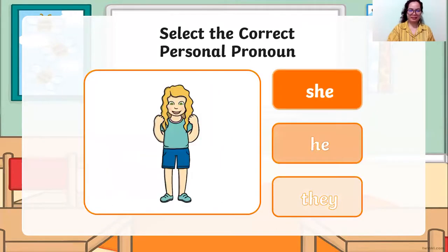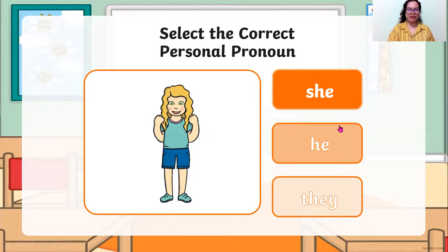Next. Girl — what do you think is the answer? A girl is only one, so we are going to use a singular personal pronoun. We only have two choices here: she and he. So we will use she, because it is a girl.